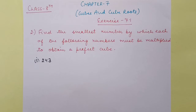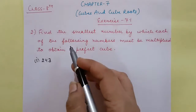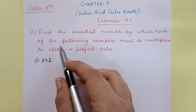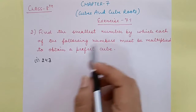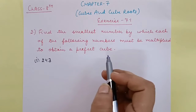Hello students of 8th class. We have started chapter number 7, Cubes and Cube Roots, and today in this video I will discuss question number 2 of exercise 7.1. Now students, let's start with our second question. Find the smallest number by which each of the following numbers must be multiplied to obtain a perfect cube.